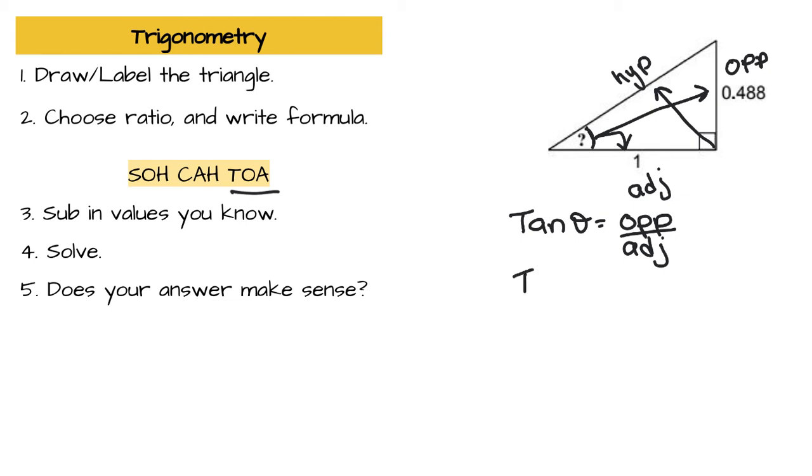So tan theta, and we don't know our angle, but we do know our opposite and we know our adjacent is one. So now what we're going to do is we're going to do the division over here. Now this just happens to be 0.488, tan theta.